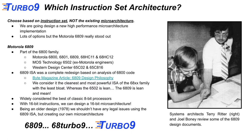Terry Ritter and Joel Boney were the system architects for the 6809, and what they ended up with is, in our opinion, the cleanest and most powerful ISA of the 6800 family with the least bloat. You could say the HC12 is a little more powerful, but it has some unnecessary features. Whereas the 6502 was very lean and cost effective, the 6809 is lean and mean — lean and mean being the next step. It's widely considered the best of the classic 8-bit processors.